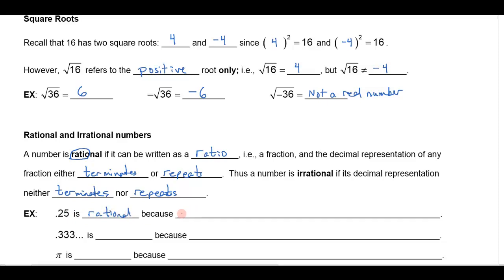And it can be written as a fraction. And this is the ultimate test if something is rational, if it can be written as a fraction. In this case 1 quarter. 0.333 repeating, that's also rational because it can be written as a fraction. You can write that as a third.